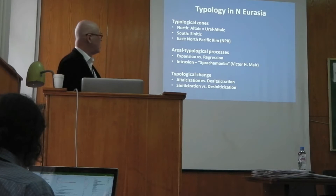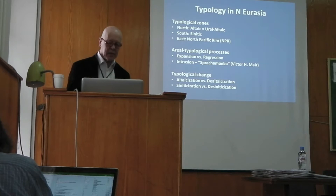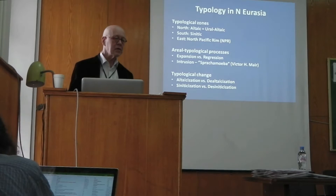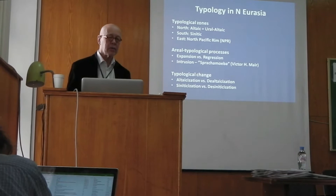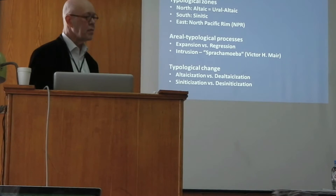In the north, we have the so-called Altaic or Uralo-Altaic typology, and in the south we have the Sinitic typology. Features typical of Sinitic languages are monosyllabic roots, tonal differences, and no morphology or isolating structure. While the Altaic languages are the opposite: they have suffix morphology, bi- or polysyllabic roots, and no tonal differences.